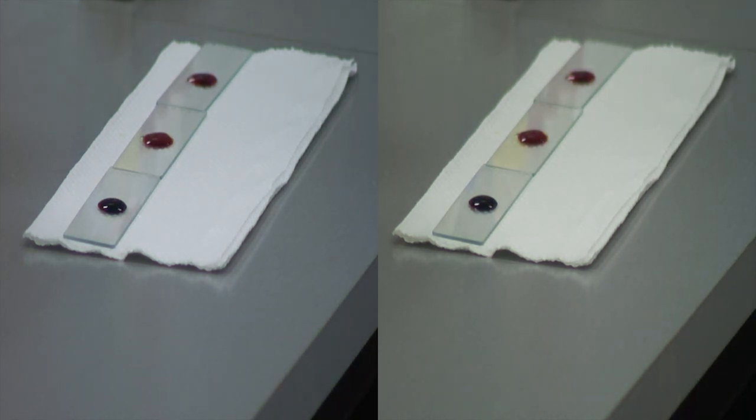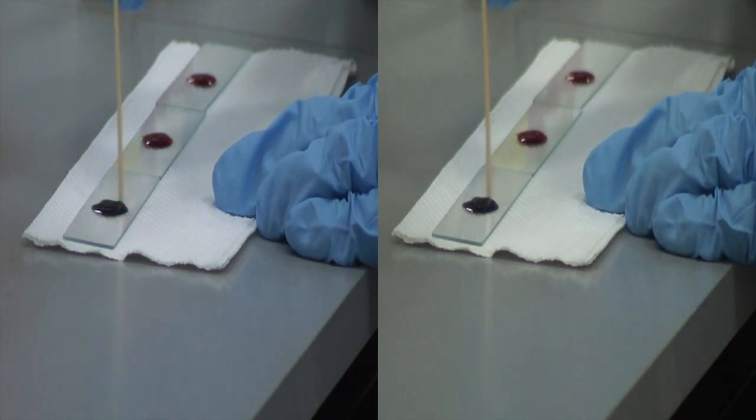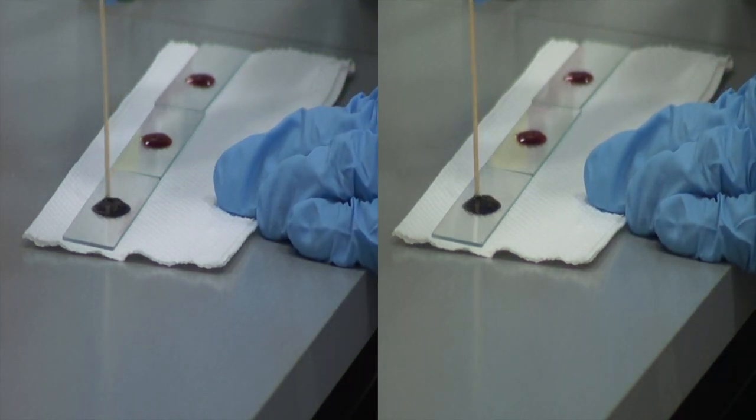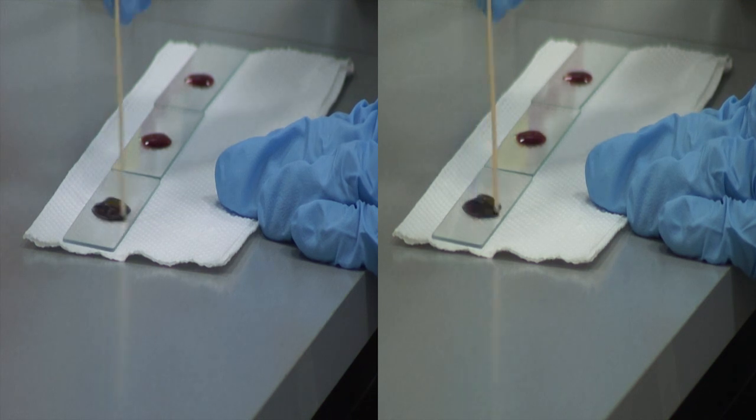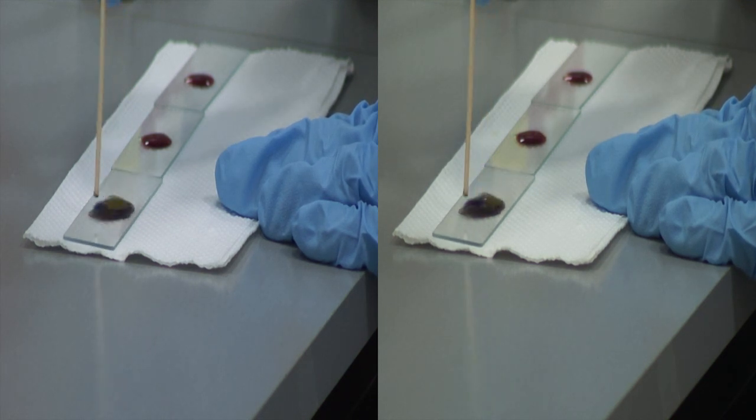Blood is left to incubate for around a minute on the glass slide to allow for agglutination. Agglutination is the irregular clumping of antigen and antibody.